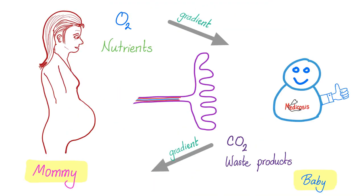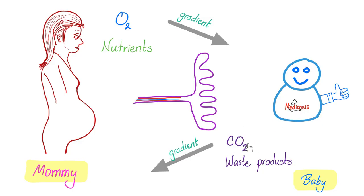For this to happen, mommy has more oxygen than the baby, so oxygen will go from mommy to the baby — which makes perfect sense because mommy has functioning lungs. The oxygen will go from mommy to the baby through the placenta. Nutrients are the same story. However, there is more carbon dioxide in the baby because the baby cannot breathe it out, so carbon dioxide piles up in the baby and goes from baby to mommy. Same thing with waste product — it's called the concentration gradient.